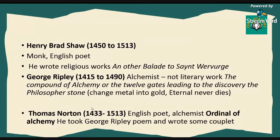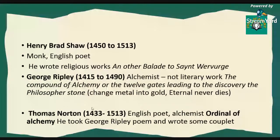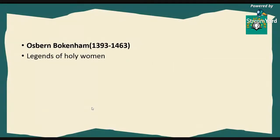Then comes Thomas Norton, 1433 to 1513. He was an English poet and also an alchemist, and he wrote a book called Ordinal of Alchemy. He built upon George Ripley's poem and wrote couplets — these alchemy works were in poetic form. Interestingly, Thomas Norton died miserably. He told everyone he had made the Philosopher's Stone, and people believed him, but he kept claiming someone stole his elixir of life — not once but twice. If he had found it, he would have been very rich turning base metal into gold. It was a kind of hoax.